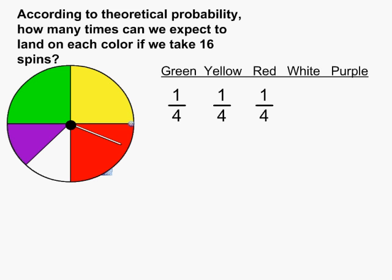Examining the white and the purple slices, we can see that each one of those occupies one eighth of the area of the spinner. So we would say the probability of those colors being landed on is one eighth each, or one out of every eight spins.